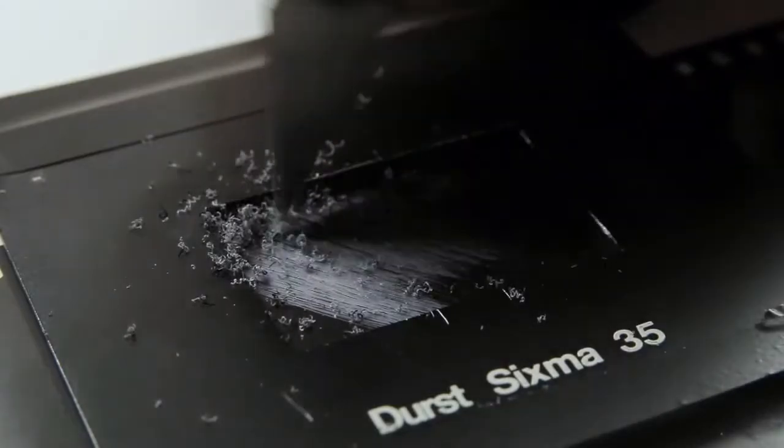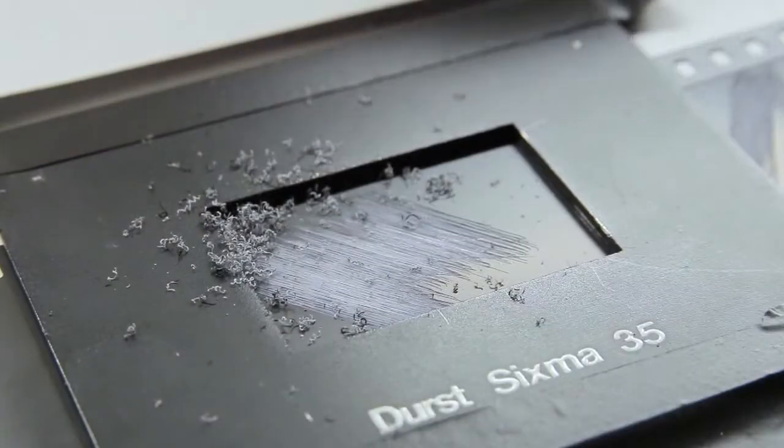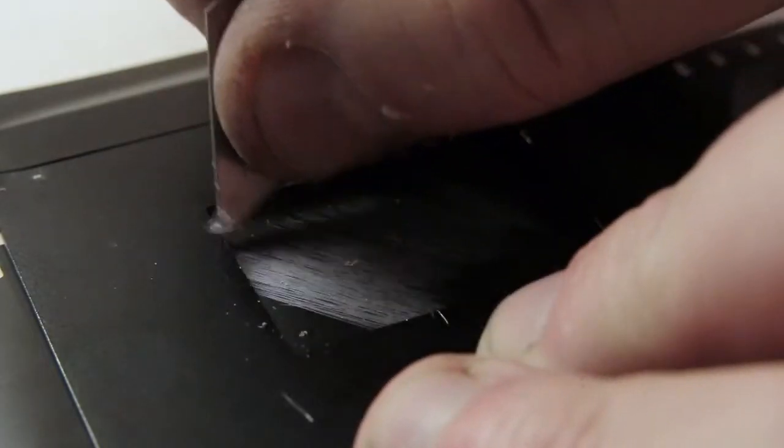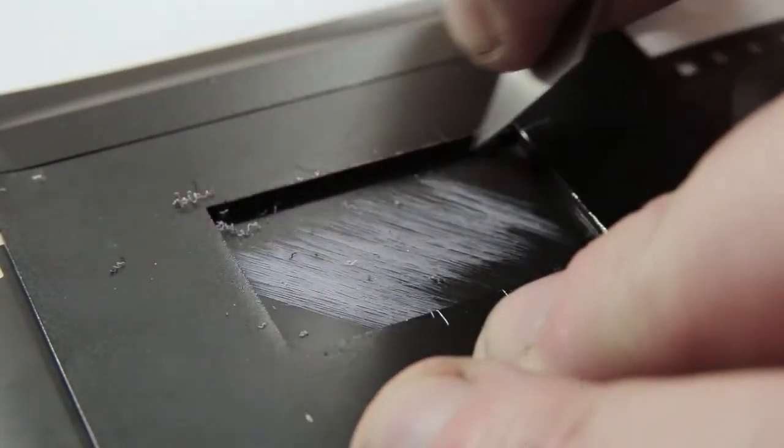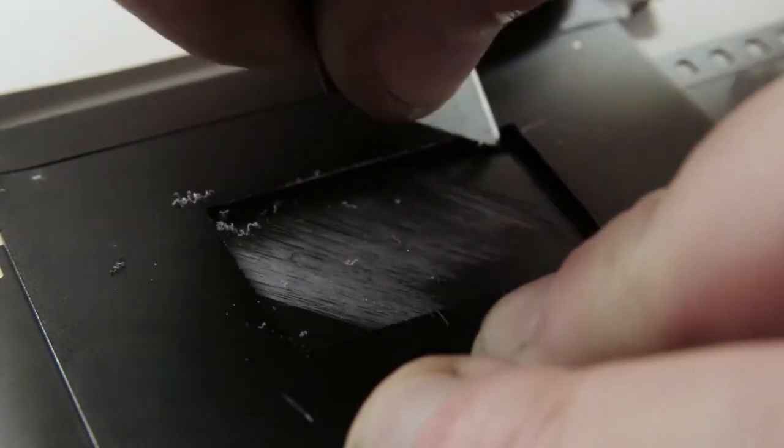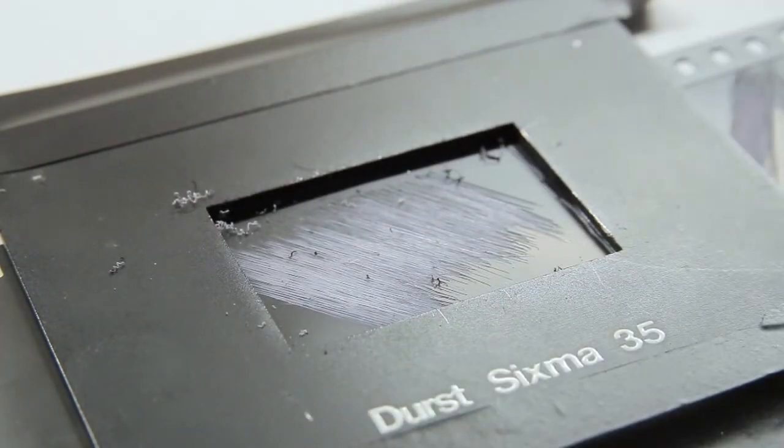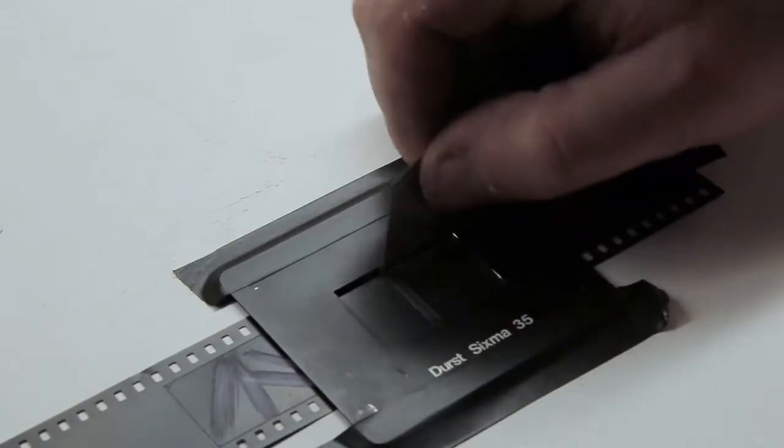The last thing I do is just score around the edge of the mask so it gives me a kind of rebate edge around the 35mm frame. I'm going to do a few more so when I go in the darkroom I'll have a few to play with.